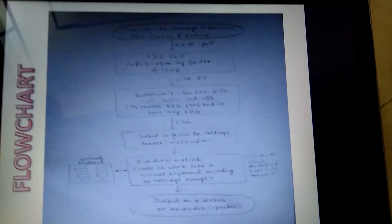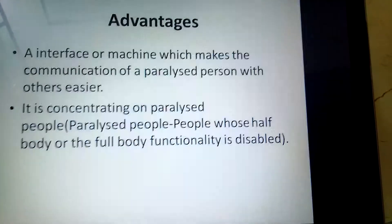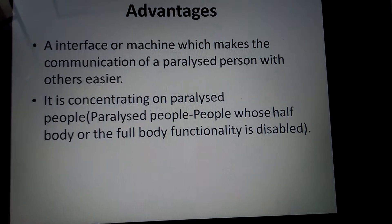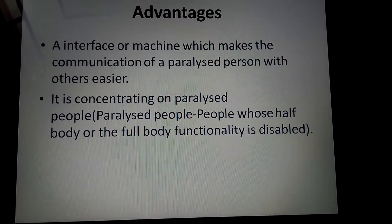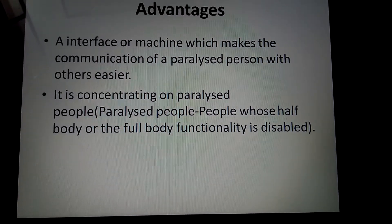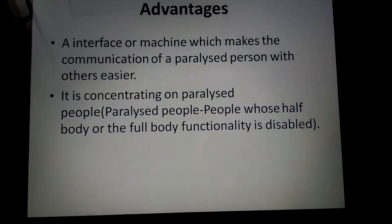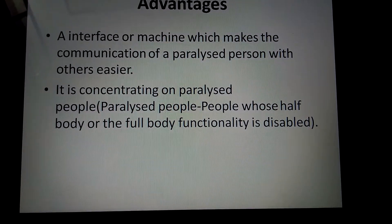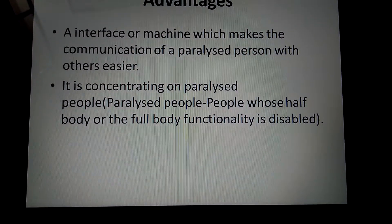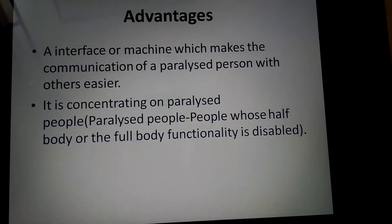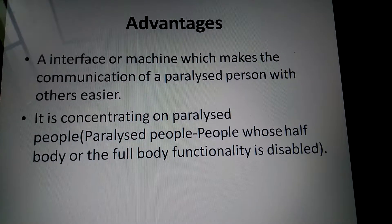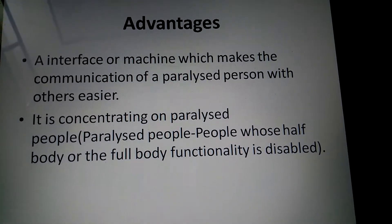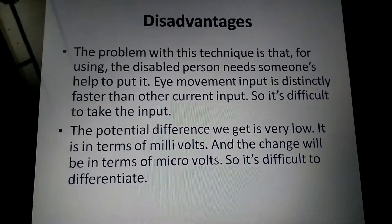This is the flow chart of the whole system. The advantages: this is an interface or machine which makes the communication of a paralyzed person with others easier. It is concentrating on paralyzed people — those whose half body or full body functionality is disabled. This is a low cost system; it will take very low cost to build.